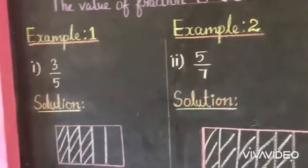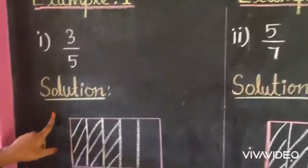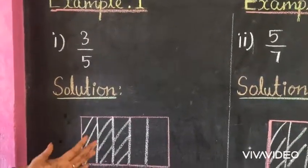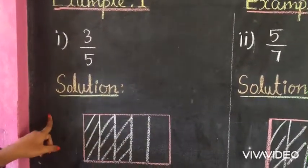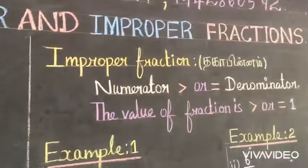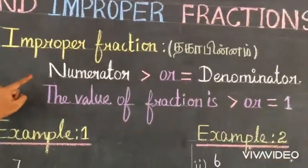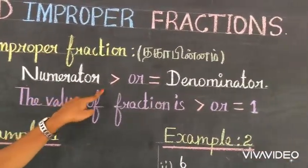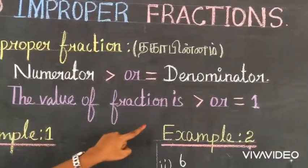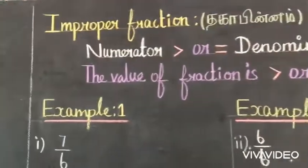Students, listen carefully. Now let us see improper fractions. What is an improper fraction? If the numerator is greater than or equal to the denominator, the value of the fraction is greater than or equal to 1.